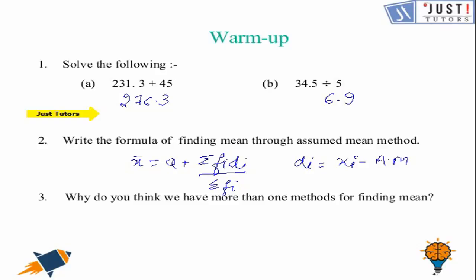Let's go to question number 3 that says why do you think we have more than one method for finding mean? Well that can be for cutting out the calculations involving integers and decimal numbers. It reduces the risk of calculation errors.